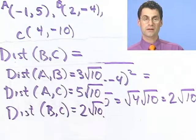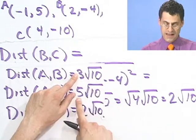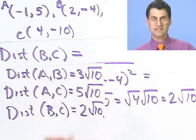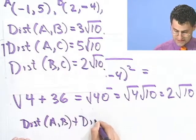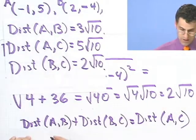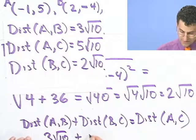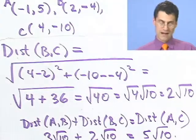Now the question is: are there two of these numbers that add up to give the third? Yes — 2√10 plus 3√10 equals 5√10. So the distance between A and B plus the distance between B and C equals the distance between A and C. That means for absolutely certain these three points are collinear. We'll try another example in the next lecture.